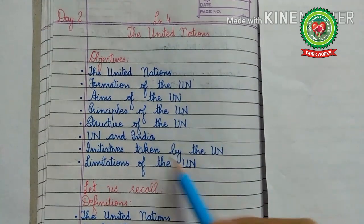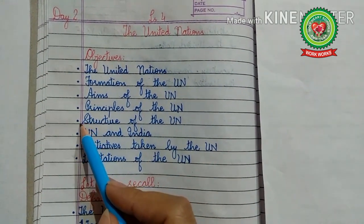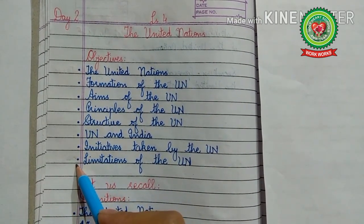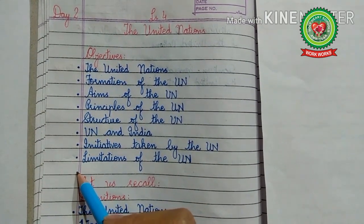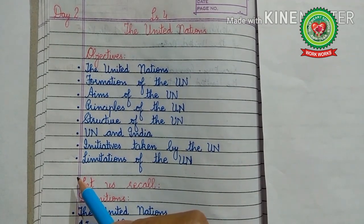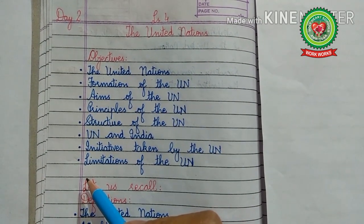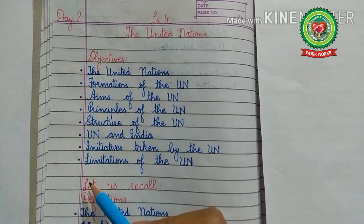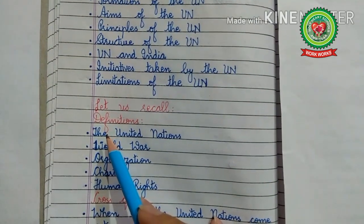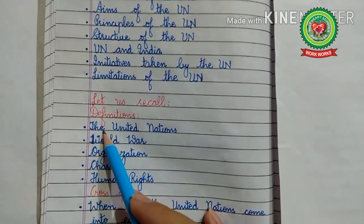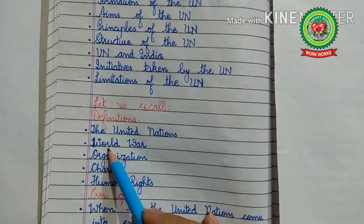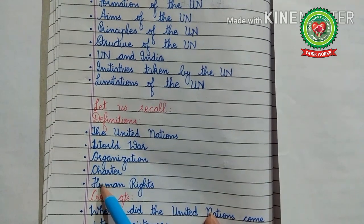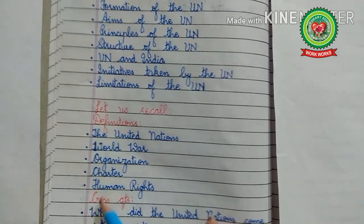We will discuss the structure of the UN in the next video. But before starting these two topics, let us recall some definitions and cross questions related to the formation, aims, and principles of the United Nations. Definitions to recall: United Nations, World War, organization, charter, and human rights.